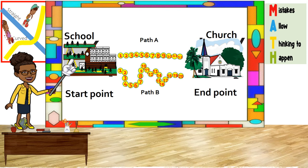Which path do you think is longer — the one with more or less points? The path with more points is longer. So the curved path is longer than the straight path, because the curved path has 20 points and the straight path only has 12 points. When we have different paths with the same start point and end point, the straight path is always shorter.